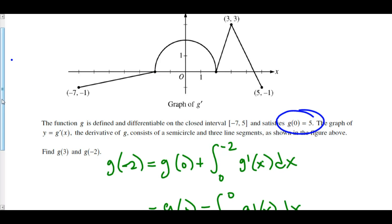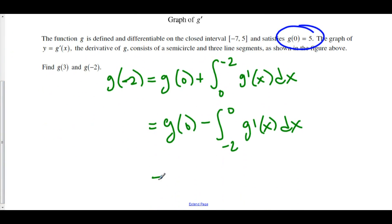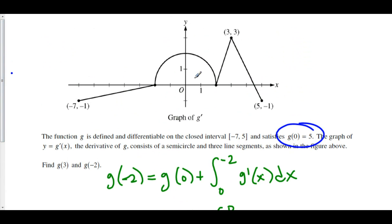So, here we go. We know that g of 0 is equal to 5 minus the net change or the integral from negative 2 to 0 of g prime of x. We're going from negative 2 to 0.